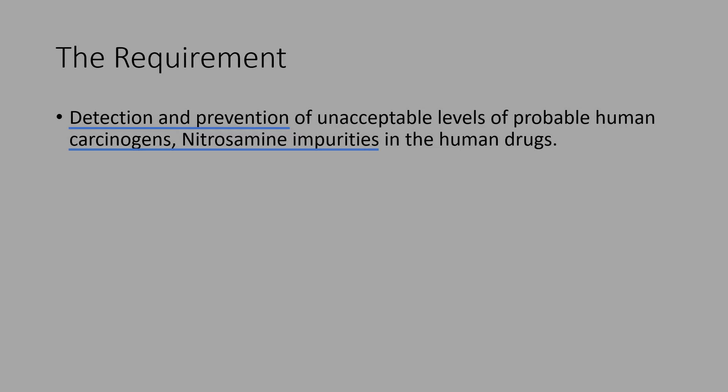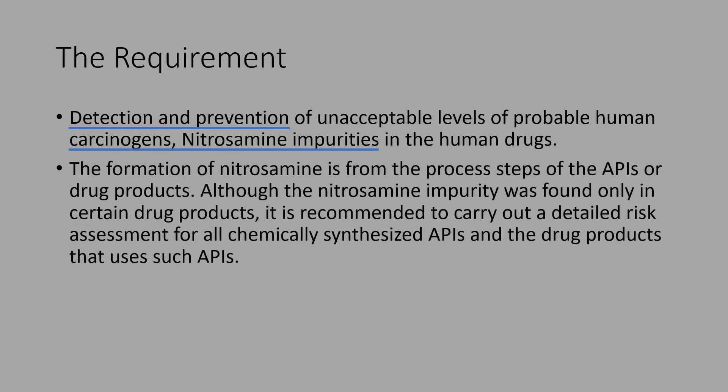These were recent findings of the FDA. Usage of drug products at higher dosages for longer periods with such cancer-causing impurities can impact human health significantly. The intent of the recommendations in the guide titled 'Control of Nitrosamine Impurities in Human Drugs,' dated February 2021, is to evaluate and mitigate with an action plan over a variety of manufacturing conditions that could cause the increase of these impurities. The formation of nitrosamines comes from process steps of the APIs or drug products.